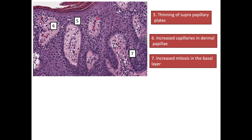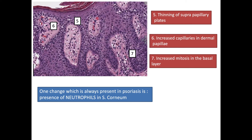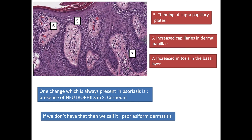In psoriasis, the turnover of keratinocytes is increased, leading to presence of mitosis in the basal layer — this should not be confused with actinic keratosis, which also presents with increased mitosis in the basal layer. We can also see superficial perivascular lymphocytic infiltrate in the dermis. One change which is always present in psoriasis is the presence of neutrophils in the stratum corneum. If neutrophils are not seen in the stratum corneum, we will call it psoriasiform dermatitis and not psoriasis.